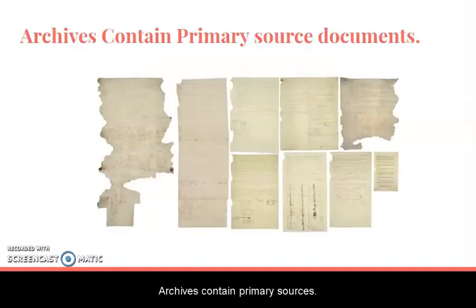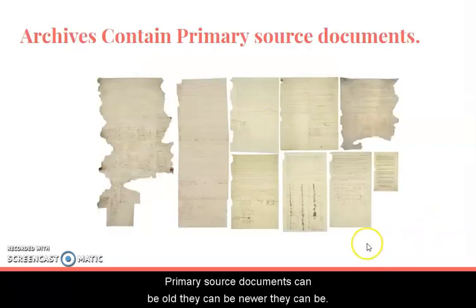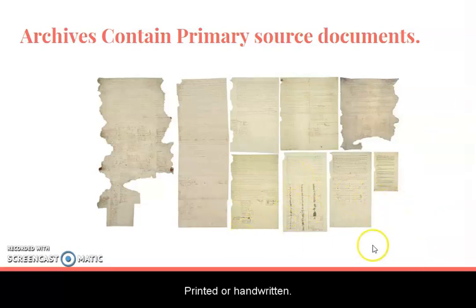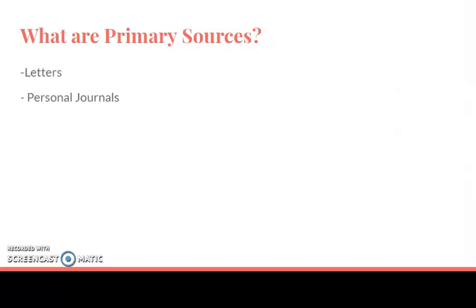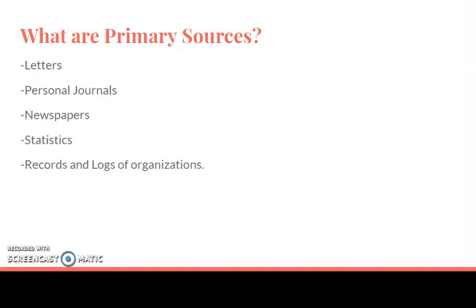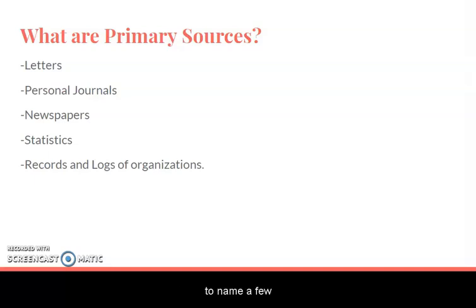Archives contain primary source documents. These primary source documents can be old, they can be newer, they can be printed or handwritten. Primary sources can be letters, personal journals, newspapers, statistics, and the records and logs of organizations, to name a few.